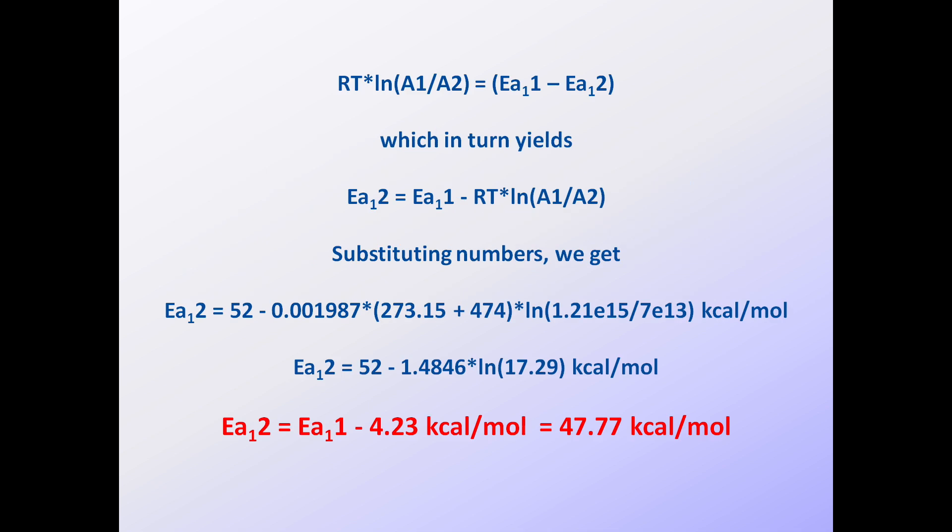Rearranging our K1 equals K2 equation, and simplifying a little using algebra, we get the series of equations shown here. The final result is that because we decreased A from its original value of 1.21 E15, we must also decrease each EA in the activation energy distribution, in this case by 4.23 kilocalories per mole.